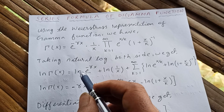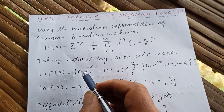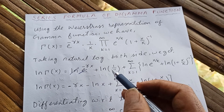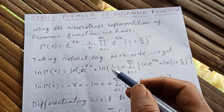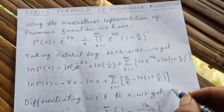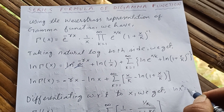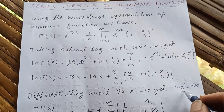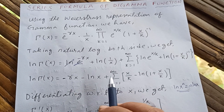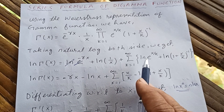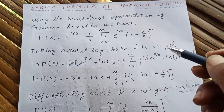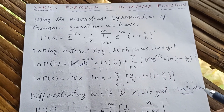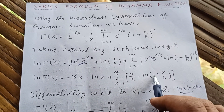Now simplifying: natural log of gamma(x) equals — since the natural log and e cancel — negative gamma x, minus natural log of x, using the property that natural log of x to the n is n times natural log of x. Then plus the sum from k equals one to infinity: x over k — this also cancels — minus natural log of one plus x over k.